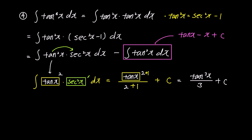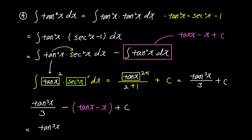Therefore, the integral of tan⁴x is tan³x/3 minus (tan x - x) + c. Expanding the brackets, it becomes tan³x/3 - tan x + x + c. Even as the degree of tan x increases, we can integrate using the methods we've employed today.